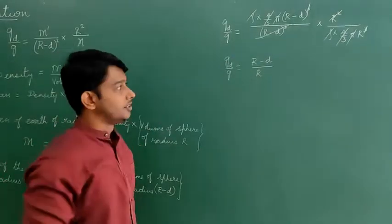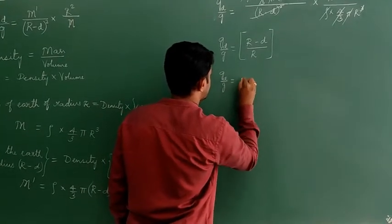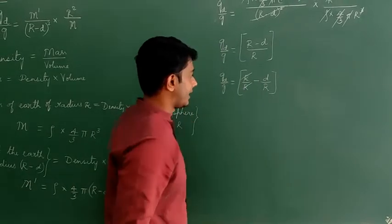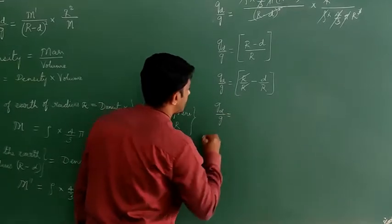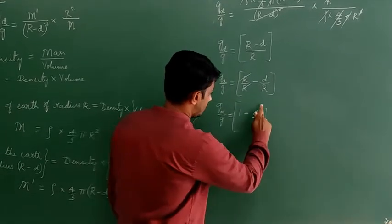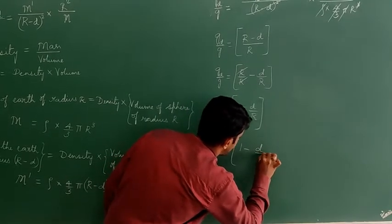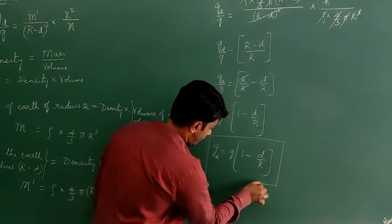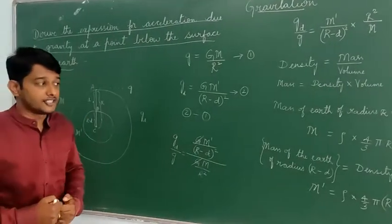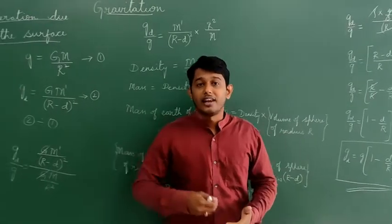So g_d / g = (R − d) / R. We can split this as R/R − d/R, which gives 1 − d/R. Therefore: g_d = g × (1 − d/R). This is the expression for acceleration due to gravity at a point below the surface of the earth.